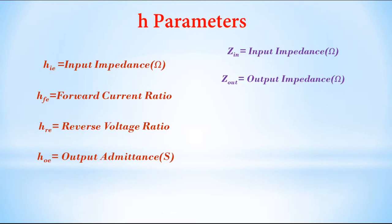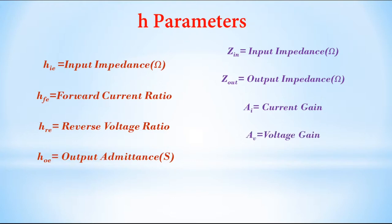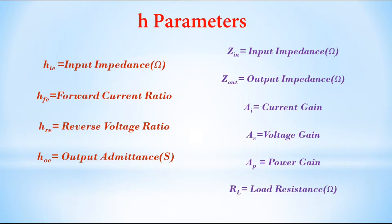Impedance is the total resistance offered by the circuit for the flow of current. AI represents current gain; it is the ratio of output current to input current and has no unit. AV is called voltage gain; it has only magnitude as it is the ratio of output voltage to input voltage. AP is called power gain and is the product of voltage gain and current gain — it has no unit. RL is the load resistance, measured in ohms.